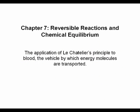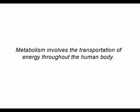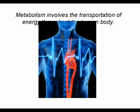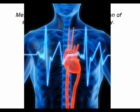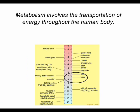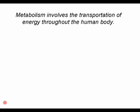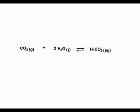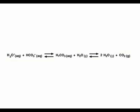The fifth connection is the application of Le Chatelier's principle to blood. Metabolism involves the transportation of energy throughout the human body. Blood is the body's transportation system that moves the products and reactants of metabolism around the body. Without blood, metabolism would not take place. Blood, however, is very sensitive to changes in pH levels. In order to resist changes to the pH, blood has a buffer system. Buffers are conjugate acid-base pairs — the buffer in blood is carbonic acid and a bicarbonate pair. When carbon dioxide reacts with water, carbonic acid is formed; however, because it is unstable, it ionizes to form bicarbonate ions and hydrogen ions.